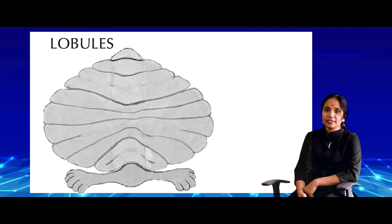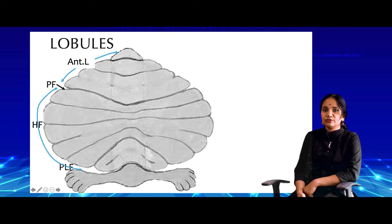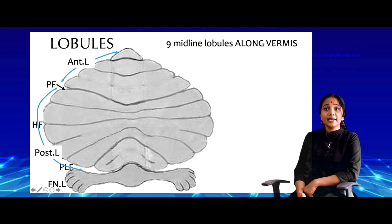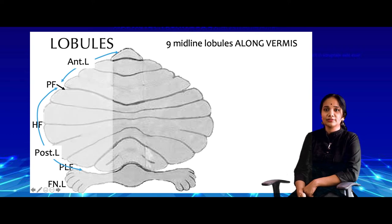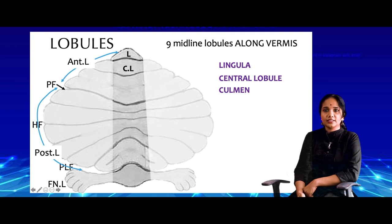Now let's look at the lobules. There are nine midline lobules labeled along the vermis. The fissura prima, horizontal fissure, and posterolateral fissure divide the cerebellum into anterior, posterior, and flocculonodular lobes. Starting from the front along the vermis, the anterior lobe contains the lingula, the central lobule, and the culmen.